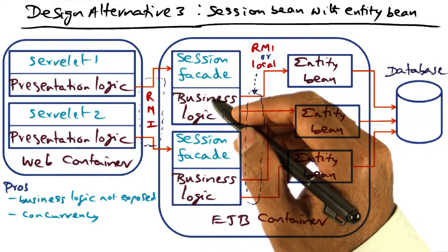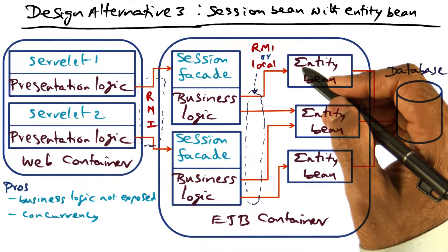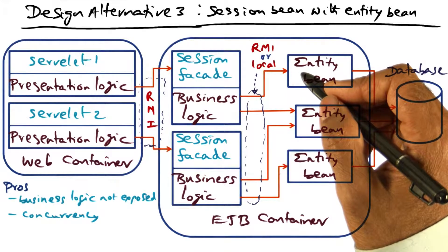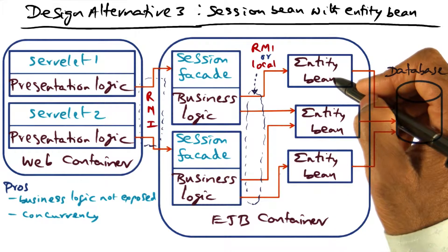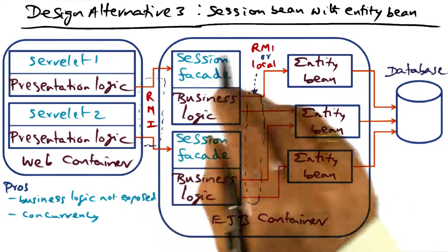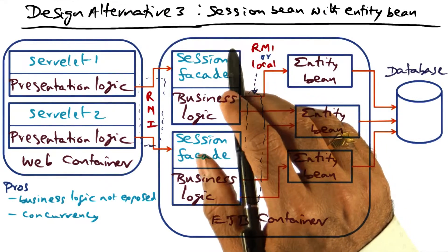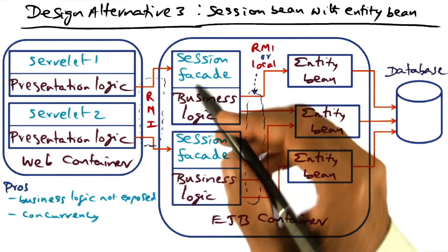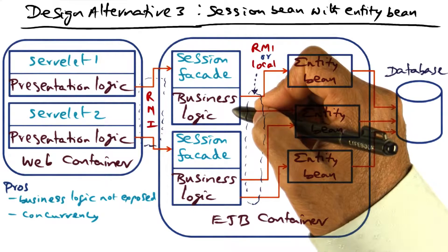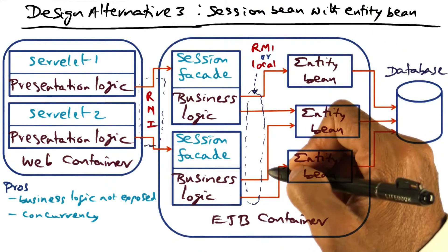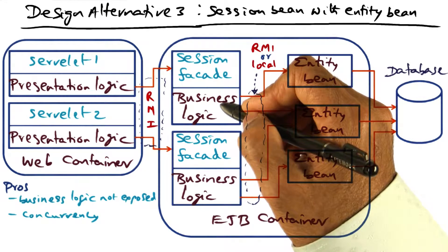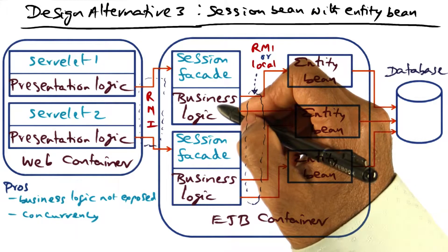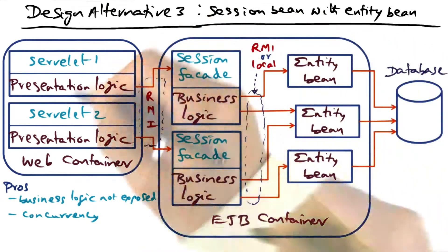So these are the three design alternatives: first, a coarse-grained session bean alternative; second, a finer-grained data access object alternative; and third, putting together the first two by using the session bean as a facade to access the data access objects encoded in entity beans to achieve concurrency. In all cases, we're only talking about how to break up the application logic, which consists of presentation to the client, business logic for enterprise decisions, and database access to retrieve the data needed to serve a particular client.